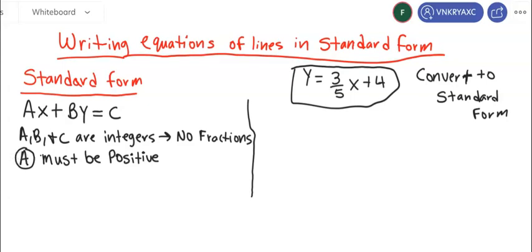So the standard form we have is here: Ax + By = C. And just to recap here and understand that A, B, and C are all integers.